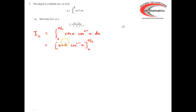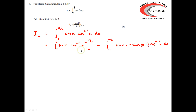Integrating the cos(x) gives sin(x); we leave the cos(x) to the n minus 1 alone in the first part of the integration by parts. Then in the second part, we've got sin(x) times by the derivative of cos(x) to the n minus 1, which can be found relatively easily using the chain rule. The derivative of cos(x) to the n minus 1 is going to be minus sin(x) times by n minus 1 lots of cos(x) to the n minus 2.